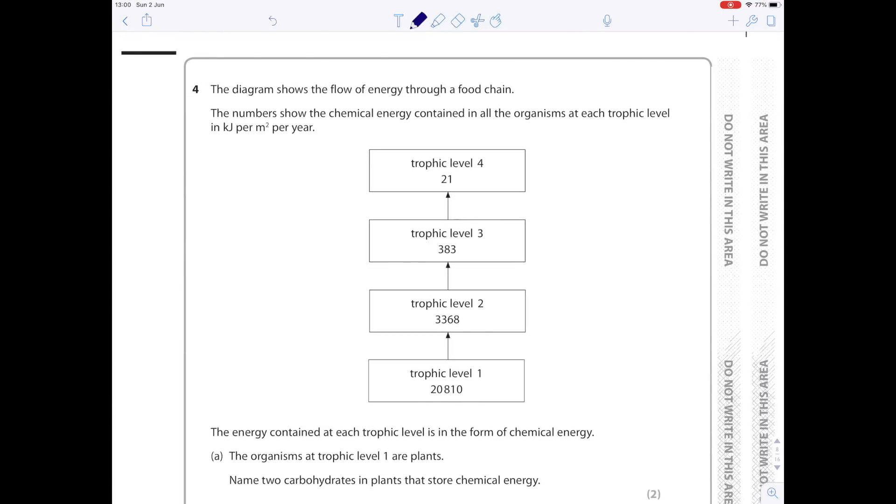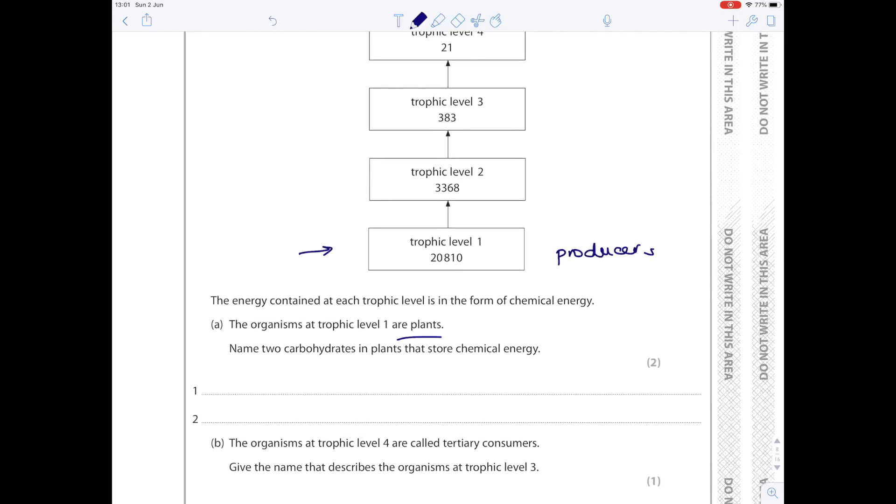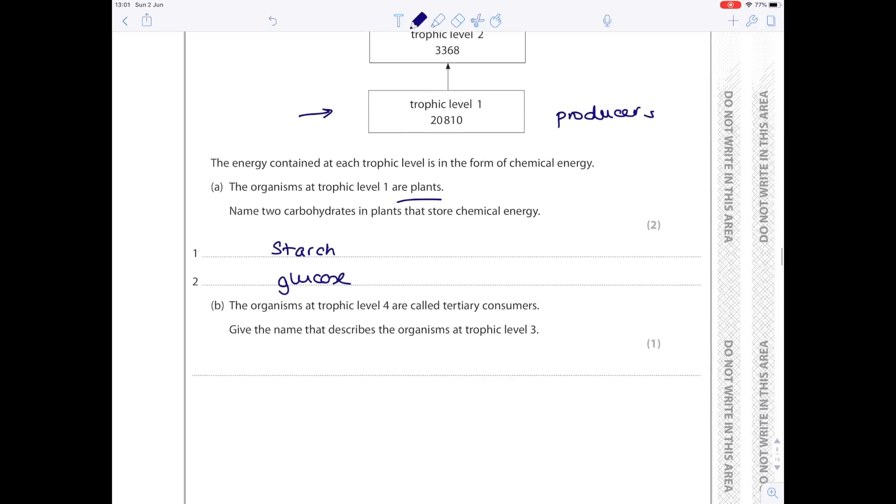Four. The diagram shows the flow of energy through a food chain. The numbers show the chemical energy contained in all the organisms at each trophic level in kilograms per meter squared per year. So we have trophic level one at the bottom. I'm going to start here because that's where most energy is. That will tend to be the producers, remember, so plants. And then we're getting to trophic level two, where we can see a huge reduction in energy, then three, then four. The energy contained at each trophic level is in the form of chemical energy. The organisms at trophic level one are plants. Name two carbohydrates in plants that store chemical energy. So effectively name two carbohydrates in plants: starch and glucose. You could also say cellulose or maltose or fructose.